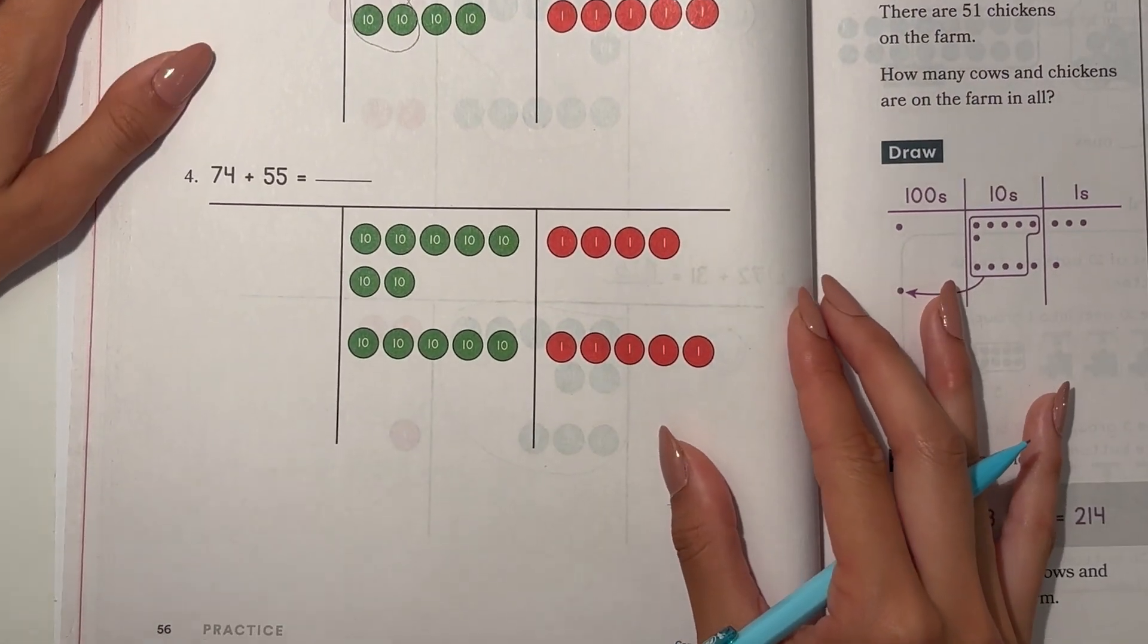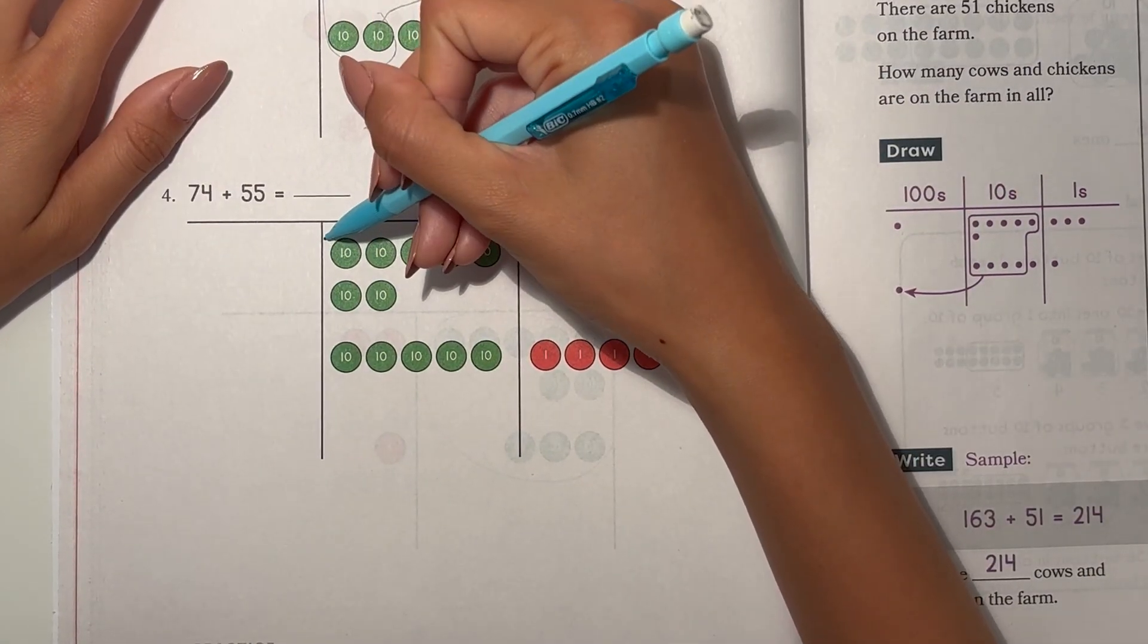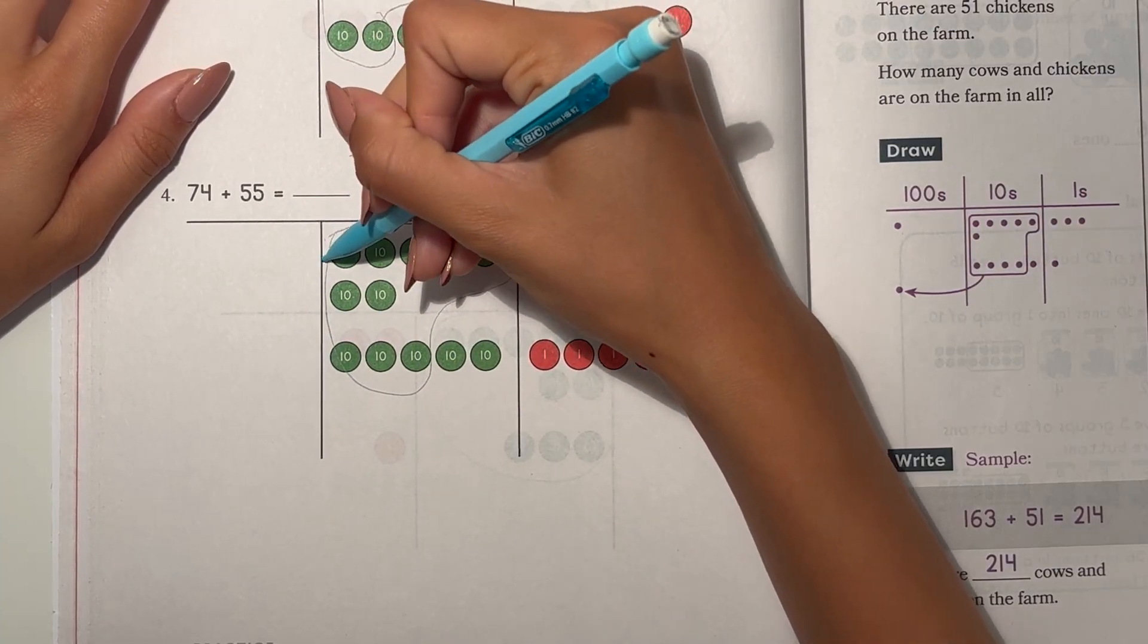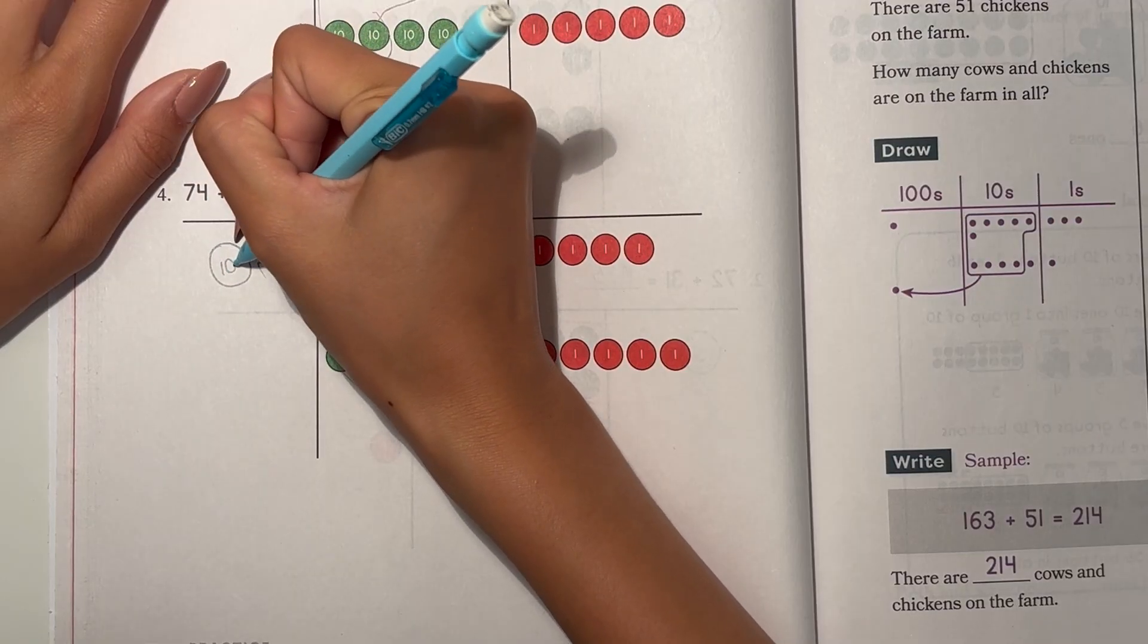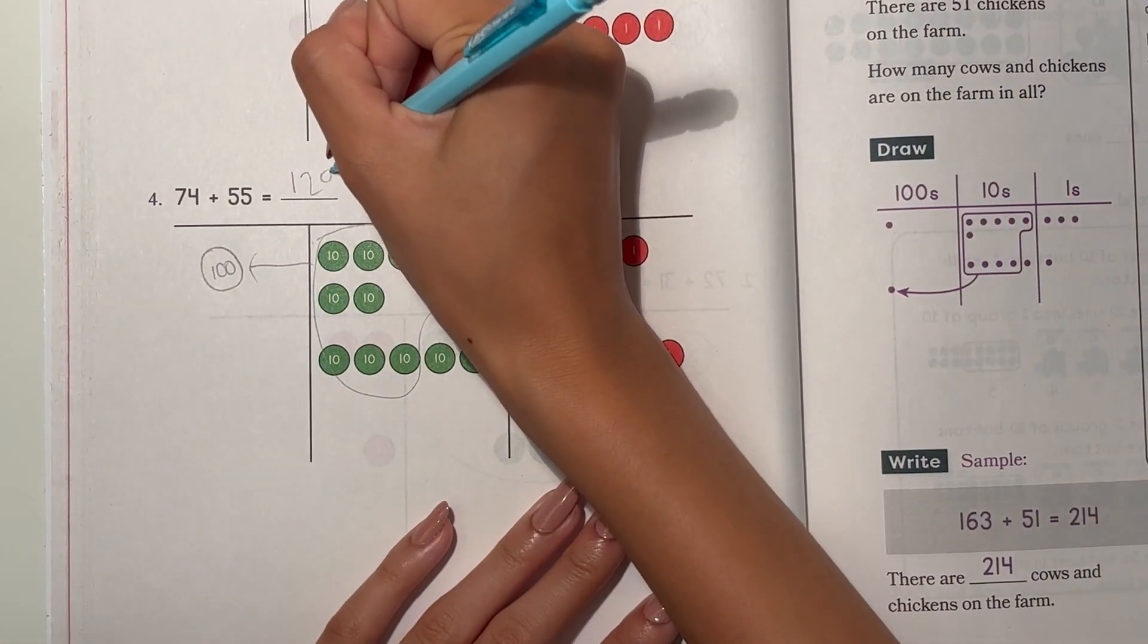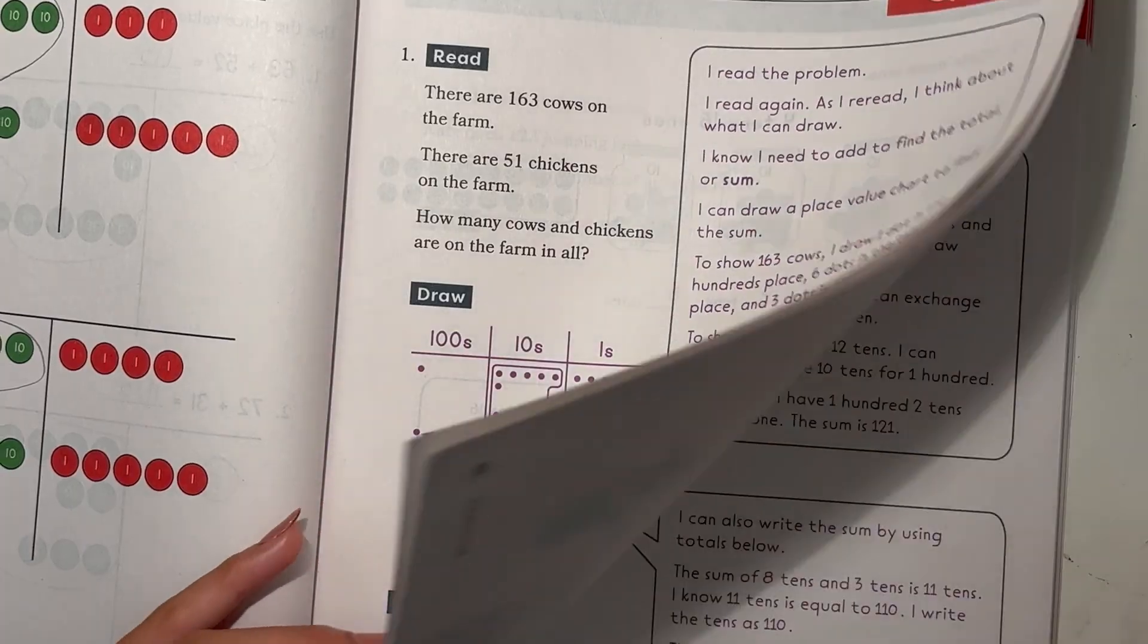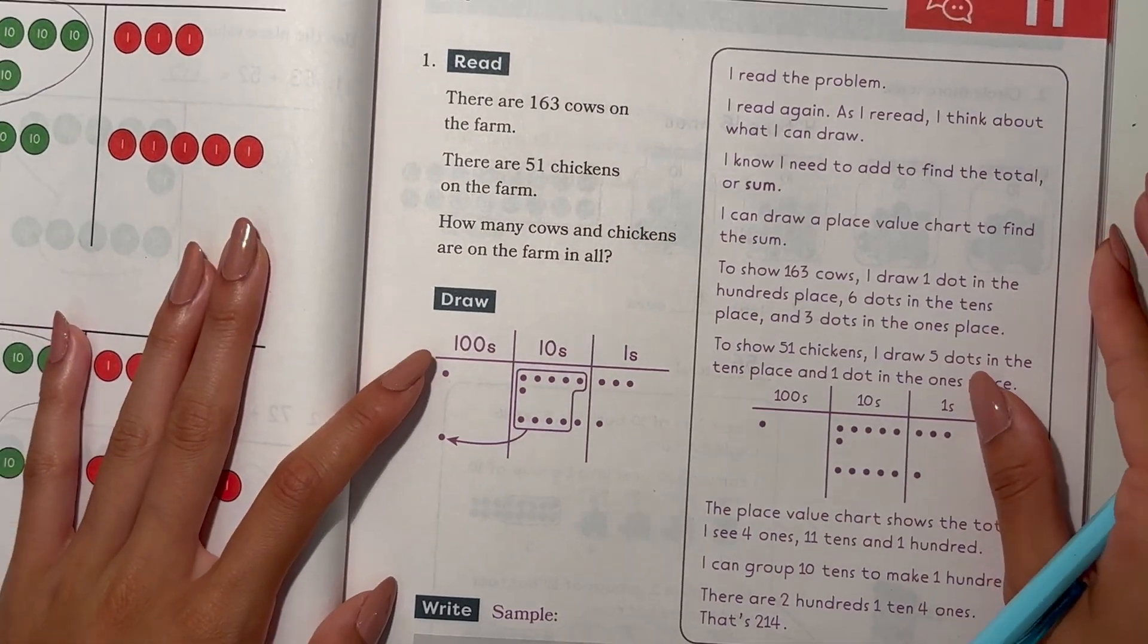And 74 plus 55. Regroup this. This becomes 100. So 129. Alright. And now we have Lesson 11.